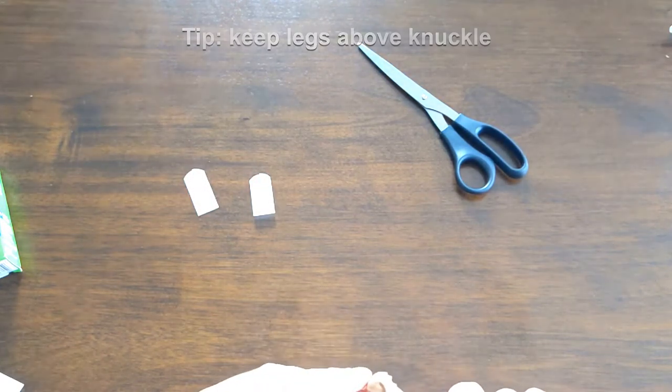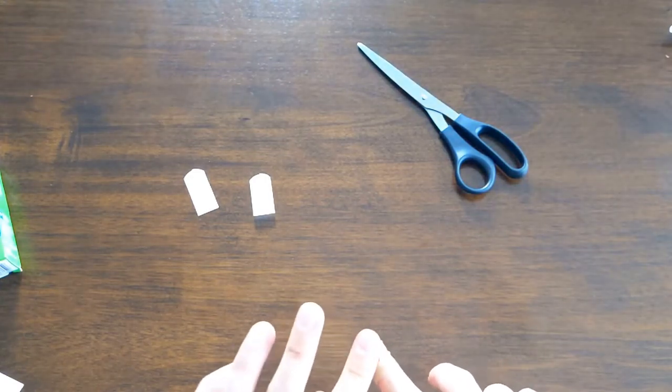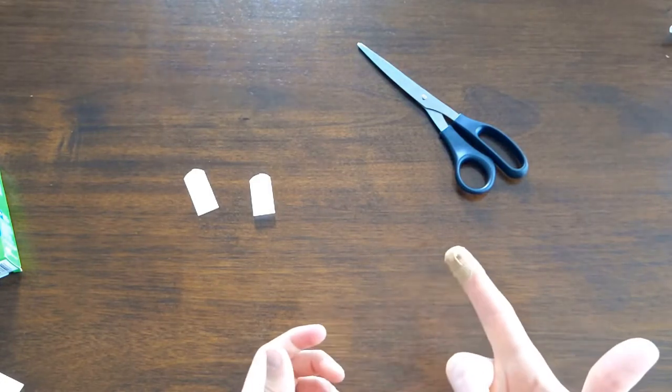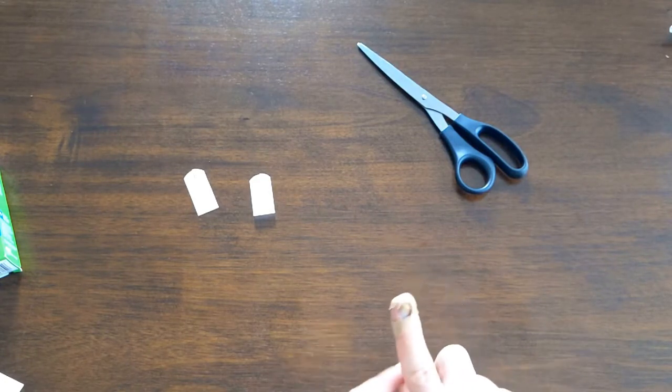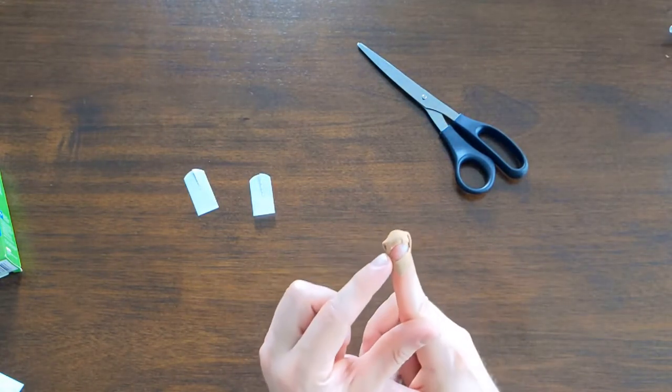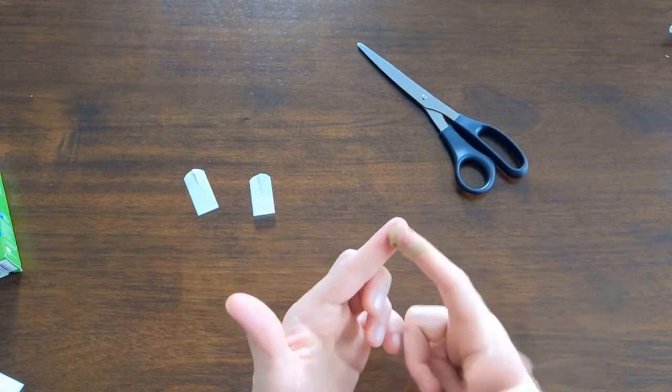And then you kind of want to pull that over a little, push it all down and get it flat. So that's pretty good. It's above the knuckle, so I can still bend my finger fine. It's obviously not perfect, but you do have adhesive all the way around to keep dirt and bacteria out.